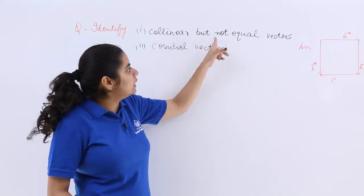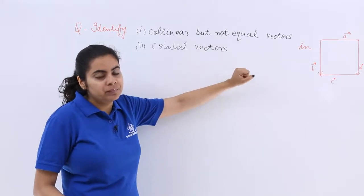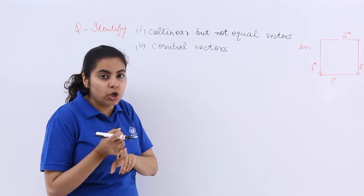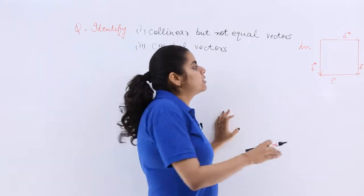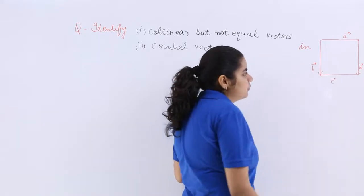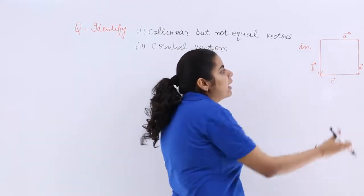So it says first part collinear but not equal. Collinear means either they should be parallel or on the same line or equal, but not equal. So as you can see B and D are parallel but these are anti-parallel.